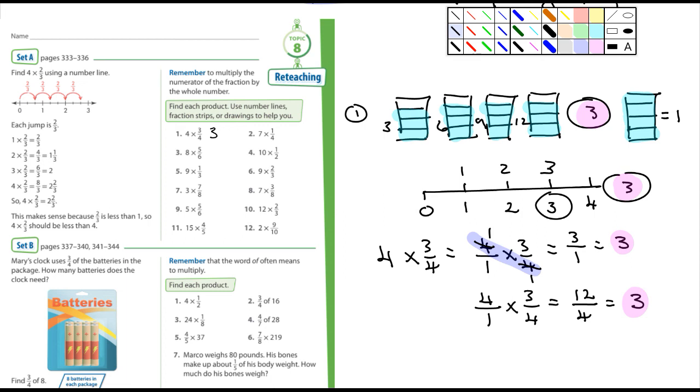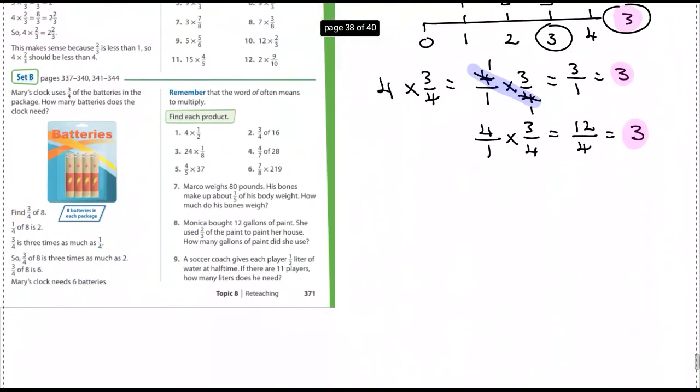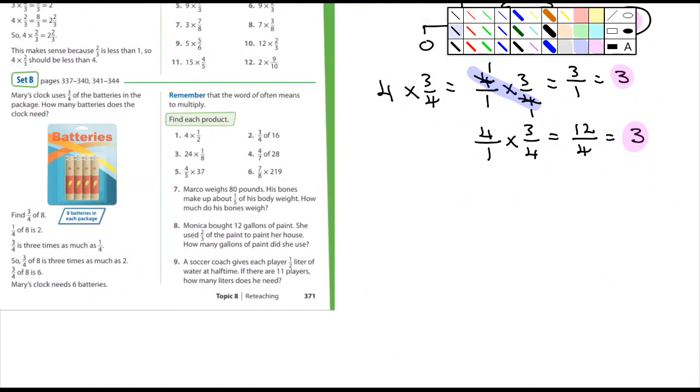Set B. It says remember that the word of often means to multiply, and I've told you that before. So it says find each product. You guys can do that and solve those problems. I don't know, how about number seven? Let's look at number seven together here. It says Marco weighs 80 pounds. Okay, I'm gonna write that down. Here's 80. And his bones make up about one-fifth of his body weight. How much do his bones weigh? Well, we're gonna have to multiply 80 by what? One-fifth. So that's going to be 80 over one times one-fifth.